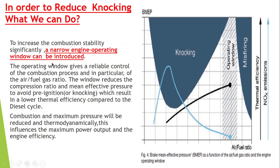The operating window gives reliable control of the combustion process and, in particular, the air-fuel gas ratio. The window reduces the compression ratio and mean effective pressure to avoid pre-ignition. By reducing the compression ratio and mean effective pressure, we avoid pre-ignition, which results in a lower thermal efficiency compared to the diesel cycle. This explains why the Otto cycle has lower thermal efficiency.